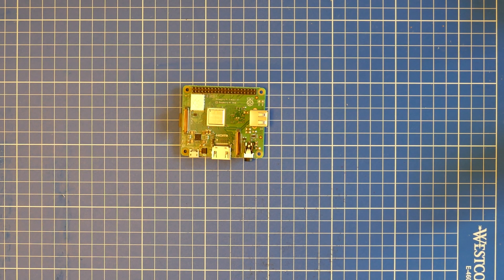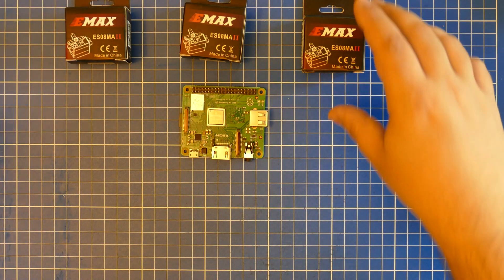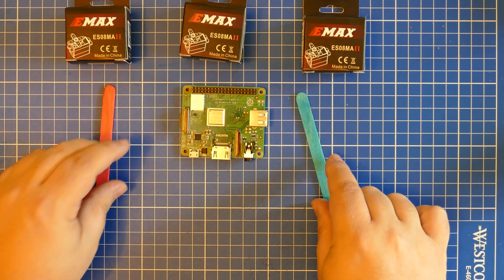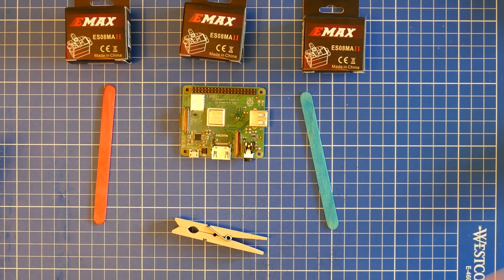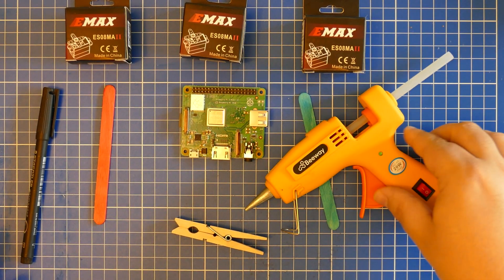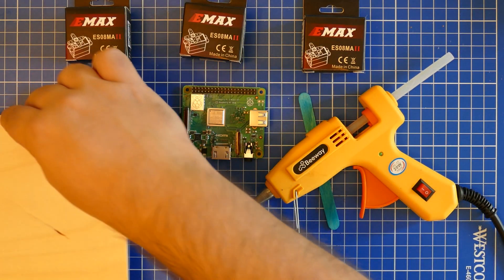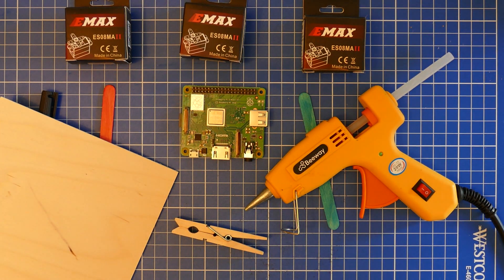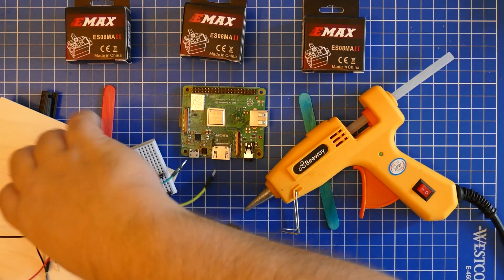To make one you're going to need a Raspberry Pi and any model will do including a Pi Zero, three servos which I'll explain in a moment, two lolly sticks, a clothes peg, a pen, some glue and I'd recommend a hot glue gun here, a base plate, any scrap wood or board will do as long as it's around 3mm thick, and some way of wiring everything together.